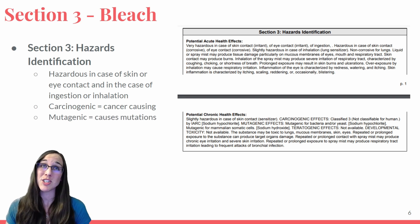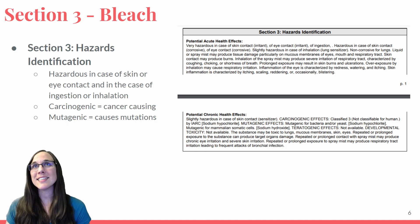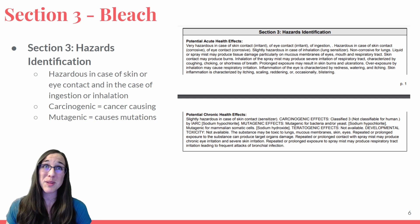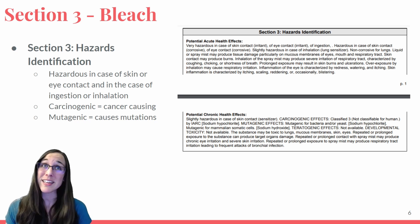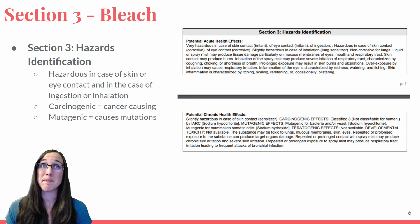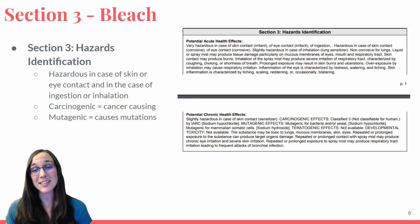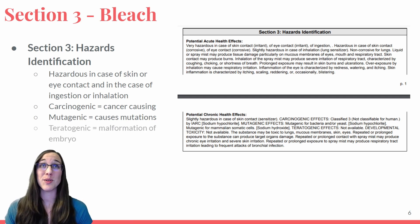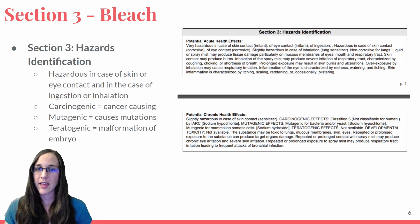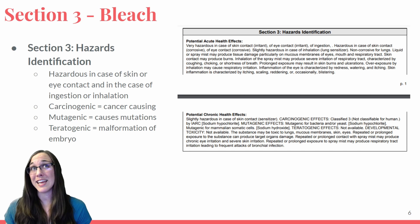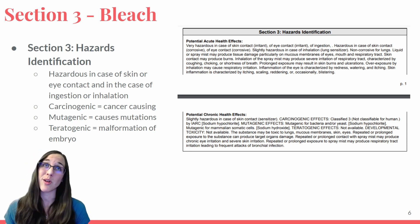Mutagenic means it causes mutations — it changes your DNA. In this case, it says it's mutagenic for bacteria and/or yeast, which is what we'd hope bleach would do since we use it to sterilize surfaces. We also see that it's mutagenic for mammalian somatic cells — meaning body cells of creatures that have mammary glands, like us, cats, dogs, and whales. Teratogenic means malformation of an embryo or developing baby — that information is listed as not available, as is developmental toxicity. The section also tells us a few other things that could hurt us about chronic or prolonged exposure to bleach.